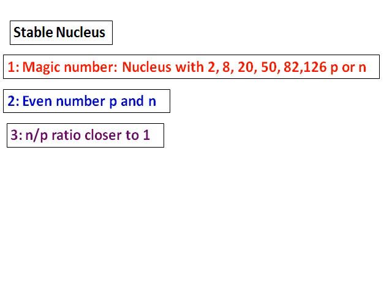The third factor is the n over p ratio. If it is closer to 1, then that nucleus will be very stable. An example is oxygen-8 or carbon-6 where the number of neutrons and protons are same and they are all very stable nuclei.